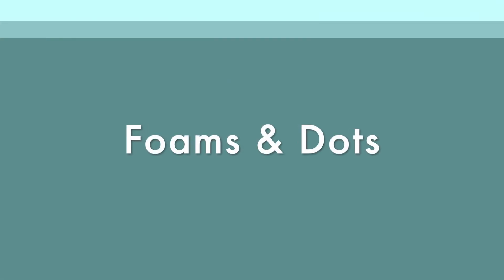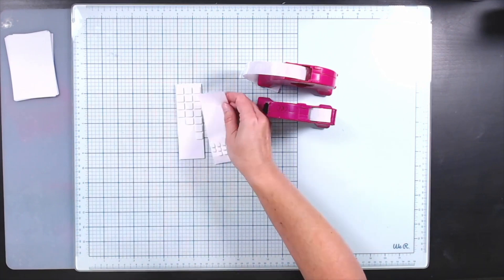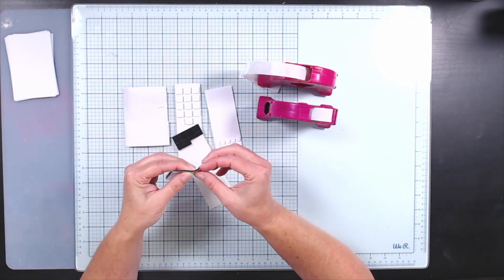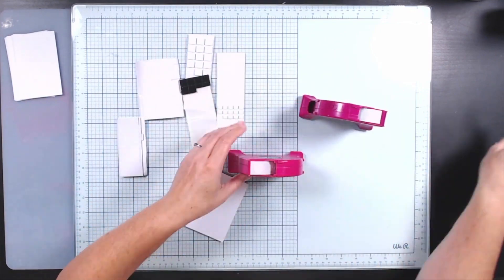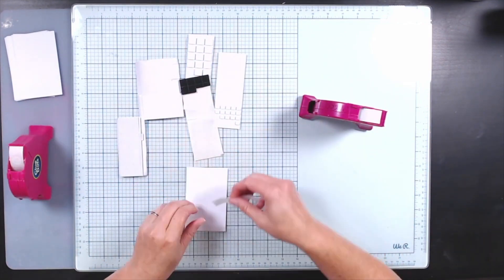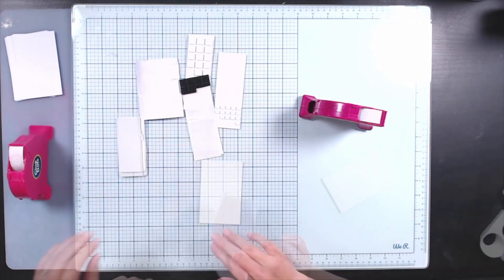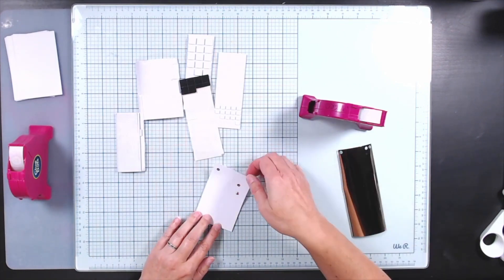Next up are more adhesives that you probably already have on hand, so we're going to be talking about glue dots as well as foam or pop dots and the different looks you can get with those. Now I have squares and strips, and of course these glue dots are kind of circular, so I'm going to play with all of these on our project.